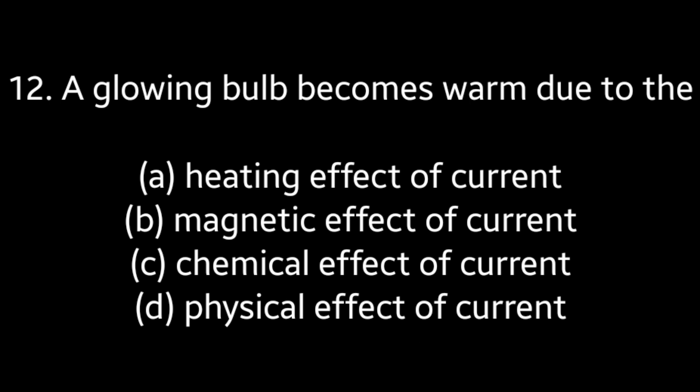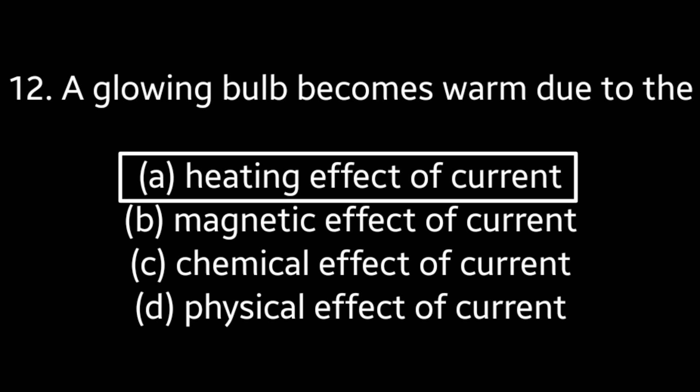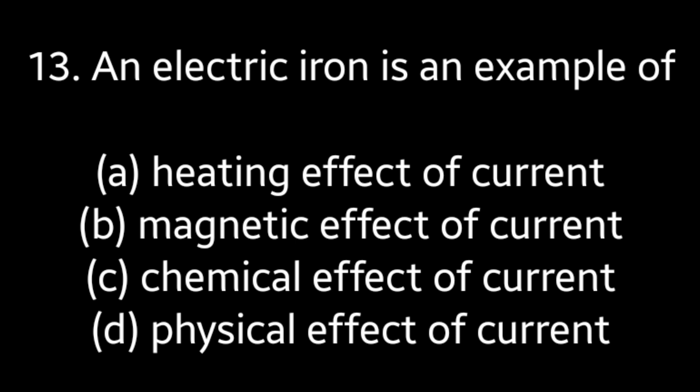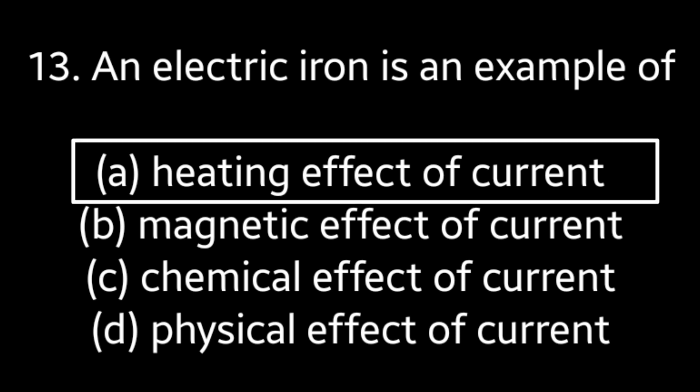Question No. 12: An electric iron is an example of — Heating effect of current, Magnetic effect of current, Chemical effect of current, Physical effect of current. Answer is Option A: Heating effect of current.